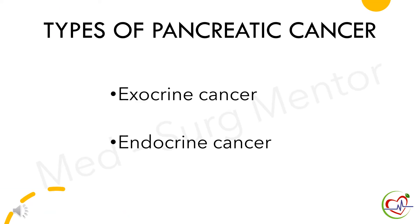There are two types of pancreatic cancer: exocrine and endocrine cancer. Exocrine cancer begins in the cells that line the ducts of the pancreas. On the other hand, endocrine cancer forms in the hormone-producing cells, or the neuroendocrine cells, of the pancreas.